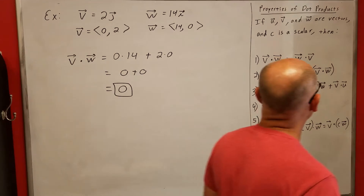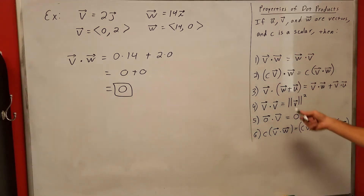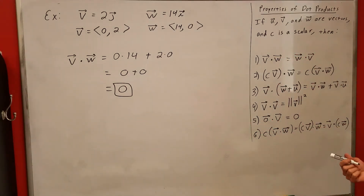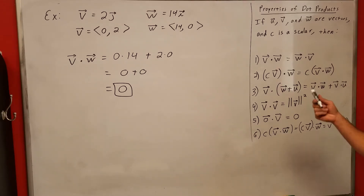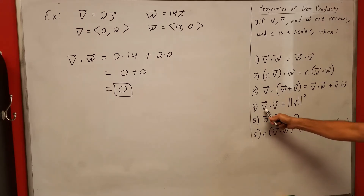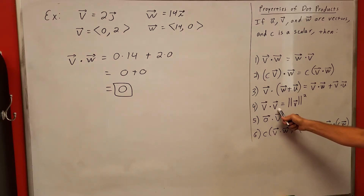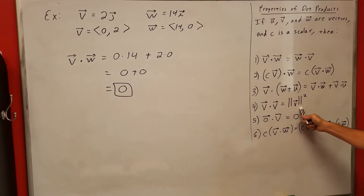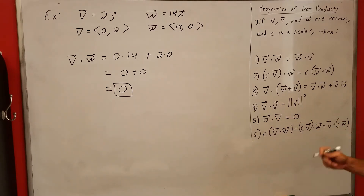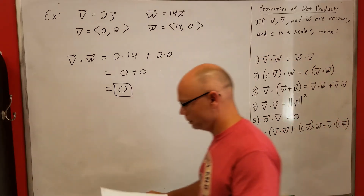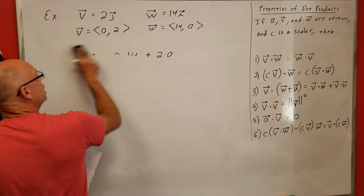We have properties of dot products written in the notes. We're about to use this one: V dot V. If you take the dot product of a vector with itself, that's equal to the magnitude of that vector squared.